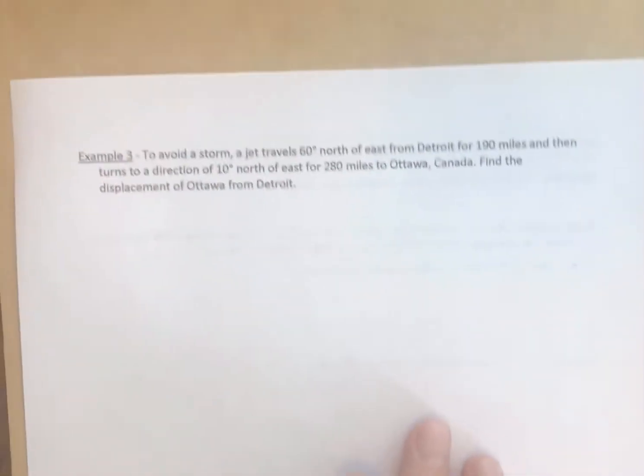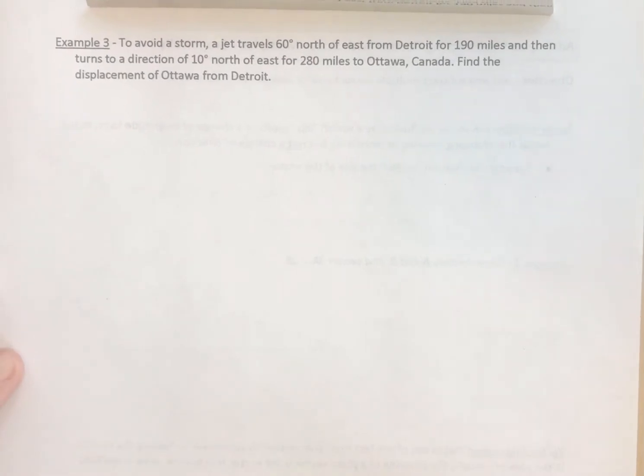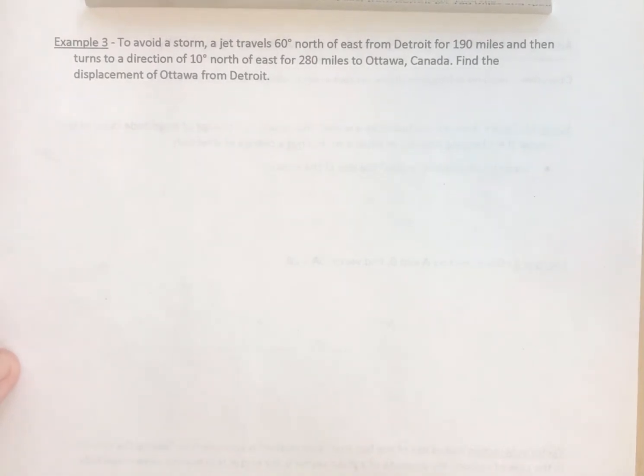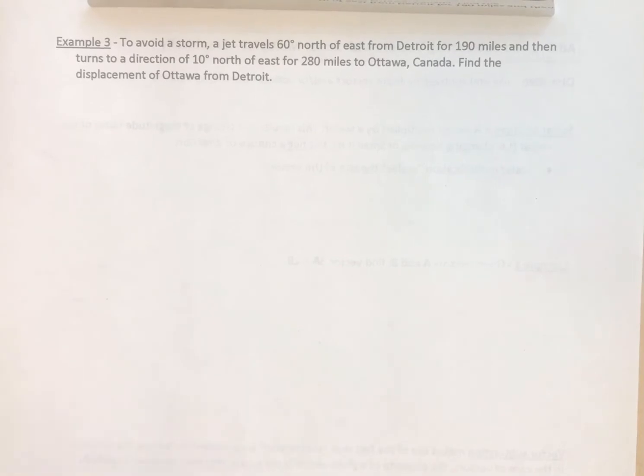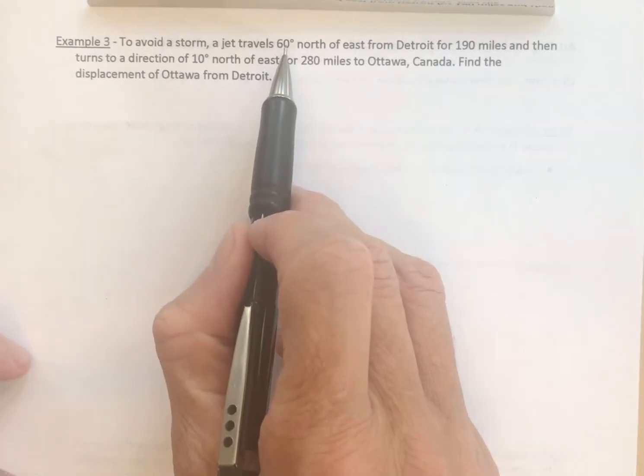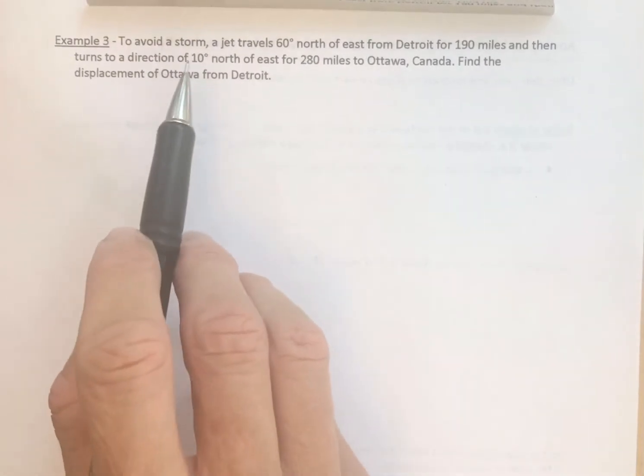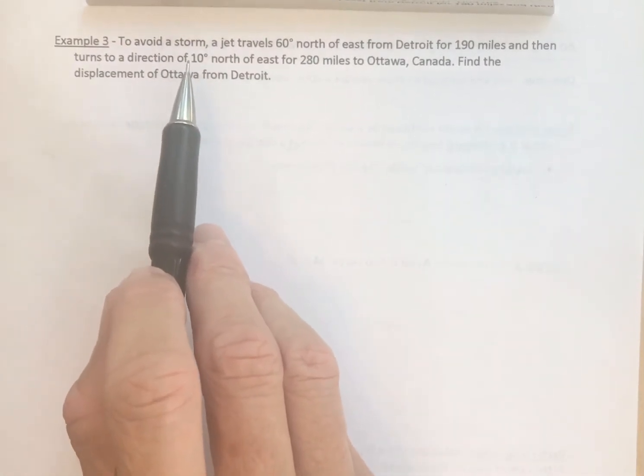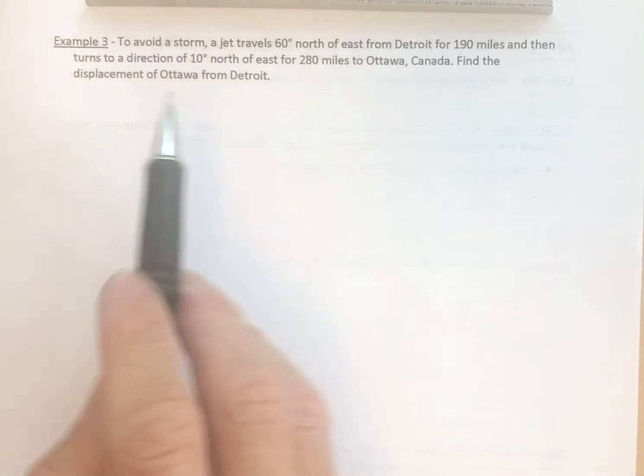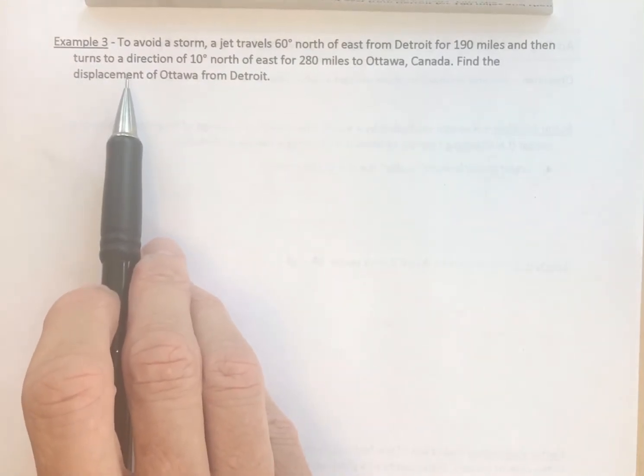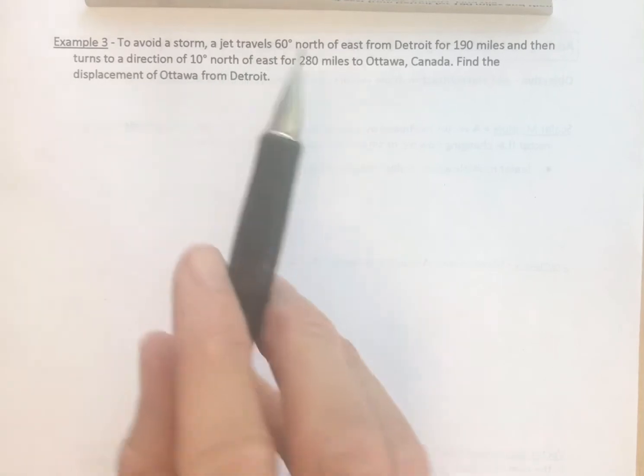All right, let's take a look at an example, a real-life example here. I'm going to make use of a protractor. We'll see that this can get a little tedious, because we're going to find other ways to do this more precisely. But here's an example. To avoid a storm, a jet travels 60 degrees north of east from Detroit for 190 miles and then turns to a direction of 10 degrees north of east for 280 miles to Ottawa, Canada. Find the displacement. Of course, displacement is both direction and magnitude. The displacement of Ottawa from Detroit.